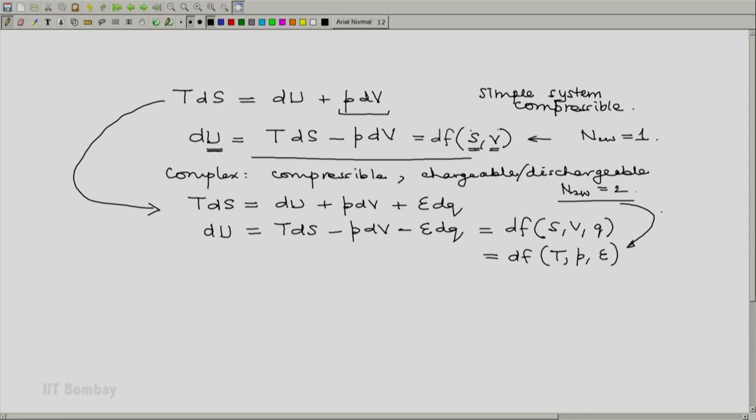And this gives us a hint that the postulate, state postulate number two, which says that the number of independent intensive properties required to define the state of a system is number of two-way work mode plus one. Here it was one, properties is two. Here it is two, properties required are three.